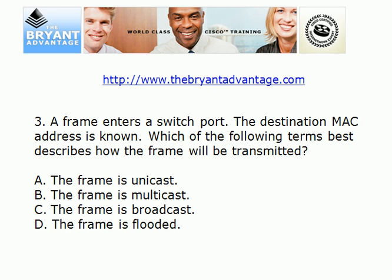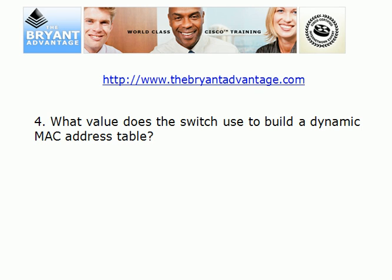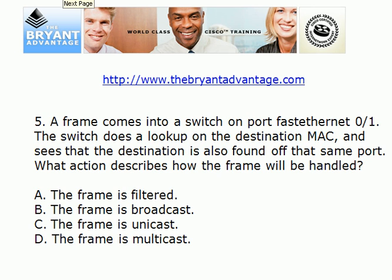For question three, when the destination MAC address is known and assuming a unicast, the frame is going to be unicast. There's no reason to flood it if the destination MAC address is known. As mentioned, the switch uses source MAC addresses to build its dynamic MAC address table. For question five, that frame is going to be filtered — it's more a theoretical question these days, since most hosts have their own dedicated switch ports. But if the source and destination are found off the same port, that frame is going to be filtered, which is essentially a fancy way of saying it's going to be dropped.